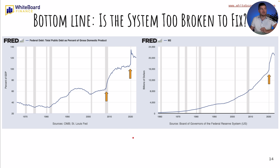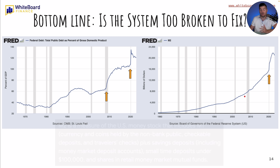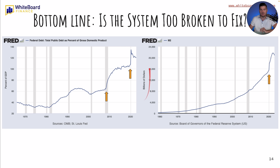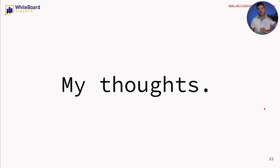So the bottom line is: is the system too broken to fix? For the government, the solution to everything is obviously spend more money, print more money, and borrow more money. At what point does it fall apart? Looking at total public debt as a percentage of GDP — after the dot-com bubble it increased; after the great financial crisis, huge hockey stick; COVID skyrocketed it. Now if you look at M2 money supply — basically money in circulation — you can see billions of dollars just skyrocketing with COVID, and then we had some quantitative tightening but we're trying to reverse all that.